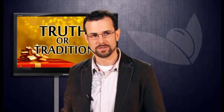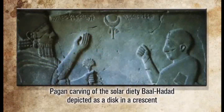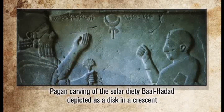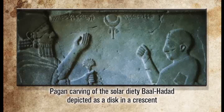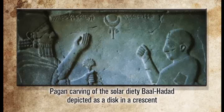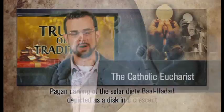Now we're going to move into all the rest of these symbols. Here on your screen you see a pagan carving of the solar deity Baal Hadad, depicted as a disc in a crescent. You can see the half-moon disc in the center of your screen with the sun cradled inside of it — that is the sun god as well as the crescent moon that surrounds it.